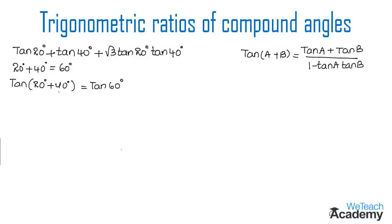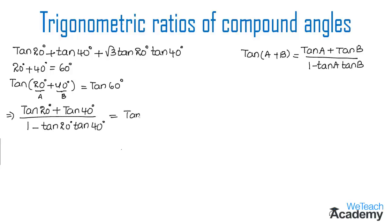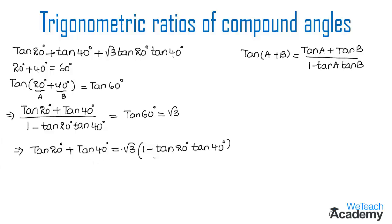Using this formula where a equals 20° and b equals 40°, we get tan 20° plus tan 40° divided by 1 minus tan 20° times tan 40°, which is equated to tan 60°. The value of tan 60° is root 3. Transferring the denominator to the right-hand side, we get tan 20° plus tan 40° equals root 3 times (1 minus tan 20° tan 40°). Multiplying root 3 into the bracket gives root 3 minus root 3 tan 20° tan 40°.